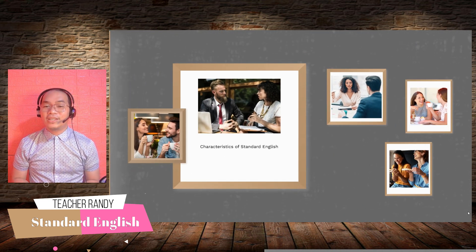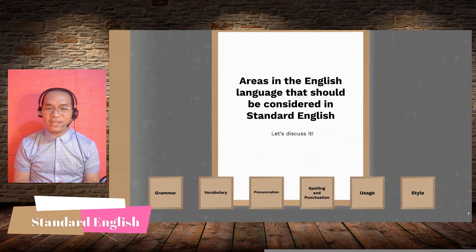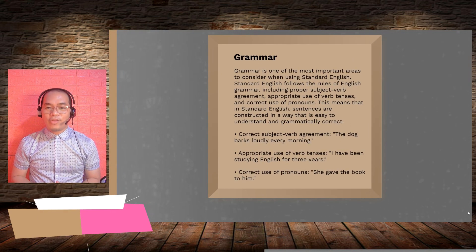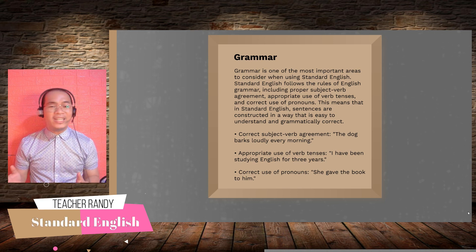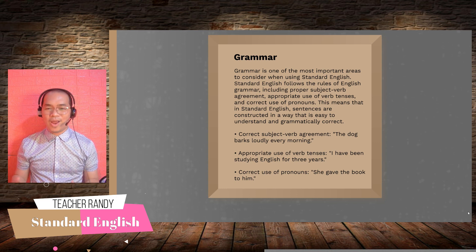Now let's discuss further the areas in the English language that should be considered in Standard English. Number one: grammar. Grammar is one of the most important areas to consider when using Standard English. Standard English follows the rules of English grammar, including proper subject-verb agreement, appropriate use of verb tenses, and of course the correct use of pronouns.